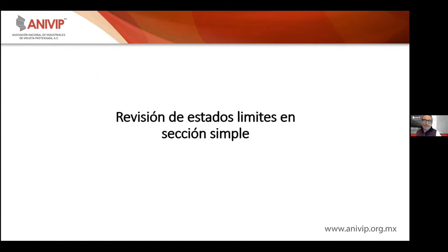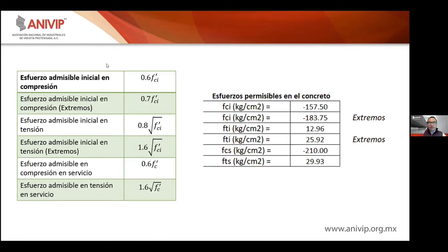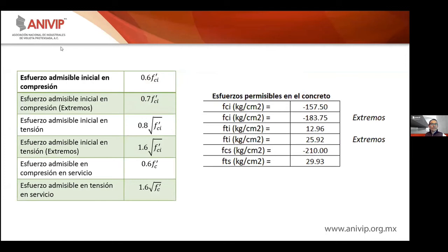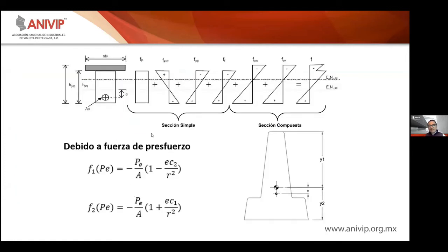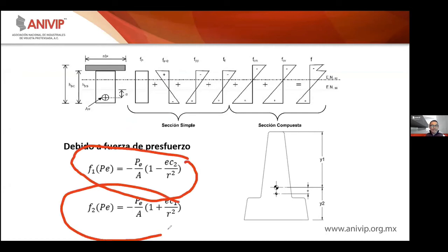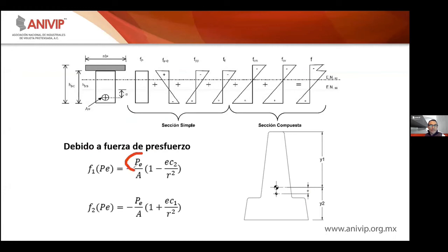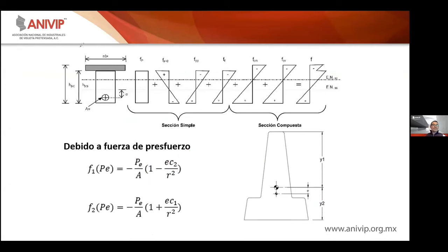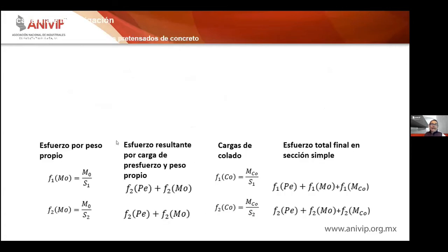Revisamos los estados límites en sección simple. Primero hay que tener en mente los esfuerzos admisibles ya calculados. Utilizamos la fórmula de mecánica de materiales que incluye la carga inicial de preesfuerzo, el área bruta, la excentricidad del elemento, las distancias C1 y C2 a las fibras extremas, y el radio de giro, para calcular los esfuerzos generados por el preesfuerzo. El preesfuerzo actúa junto con el peso propio; el momento de peso propio es WL²/8.